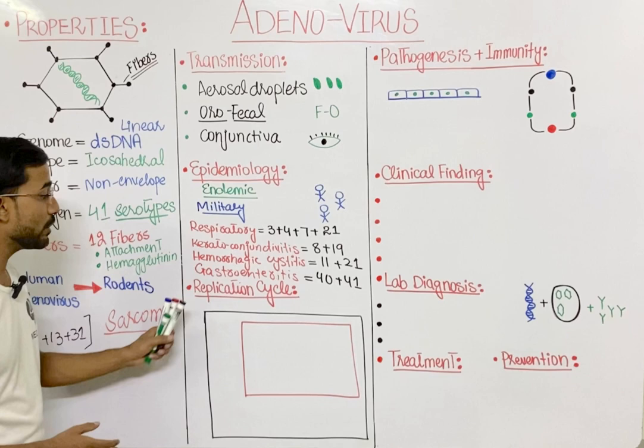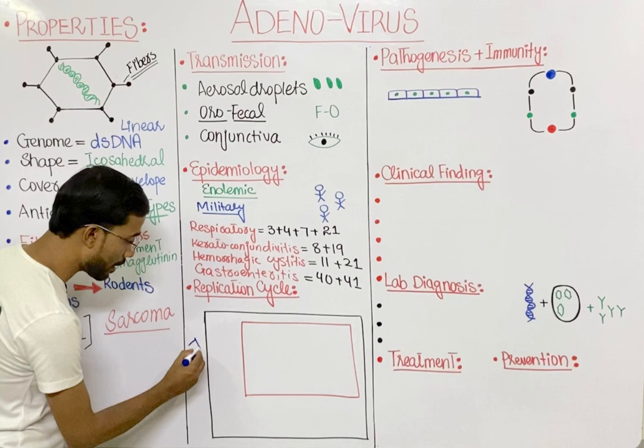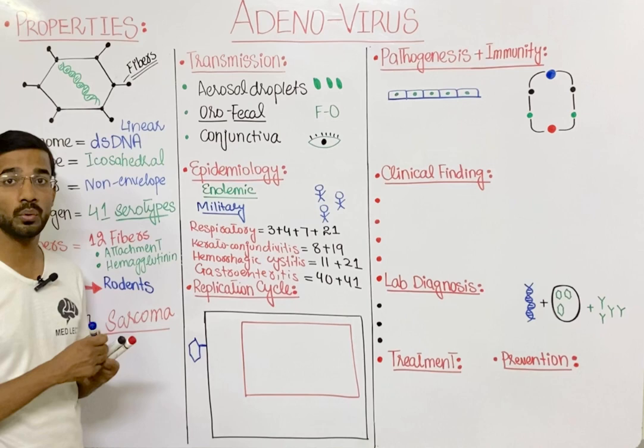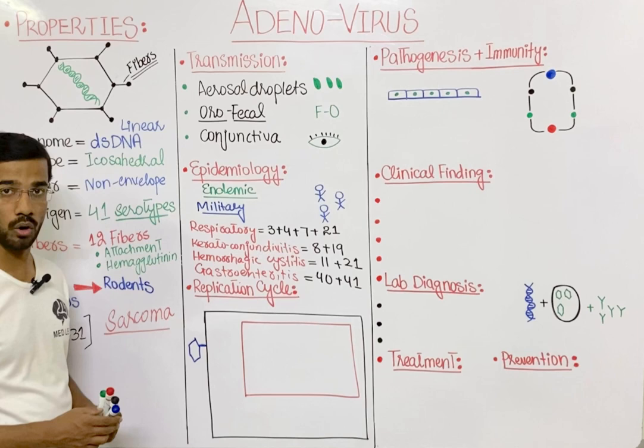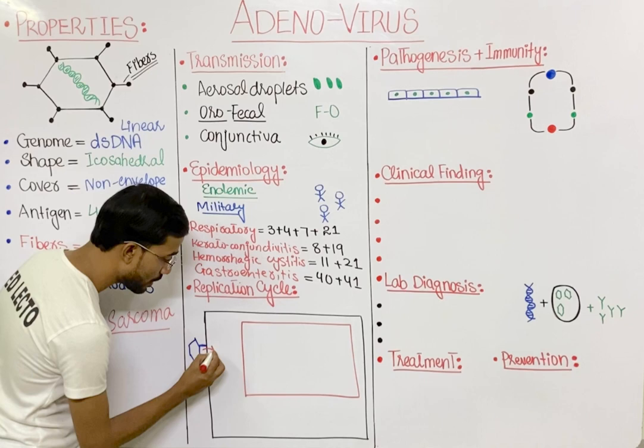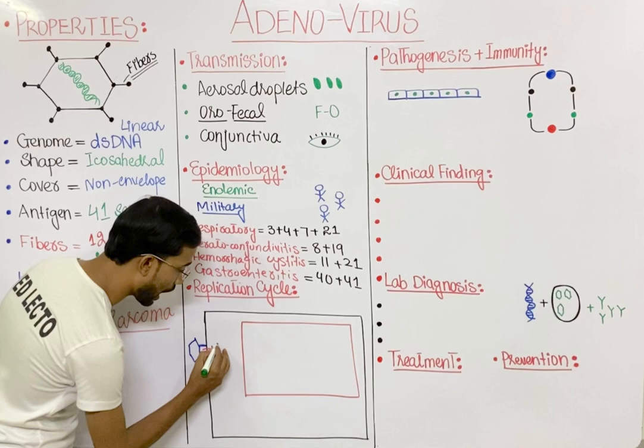Regarding the replication cycle, the adenovirus first attaches to the host cell through its fibers, because the fibers help in attachment to the host cell. The virus then enters the cell, and after uncoating you will see the release of the DNA.